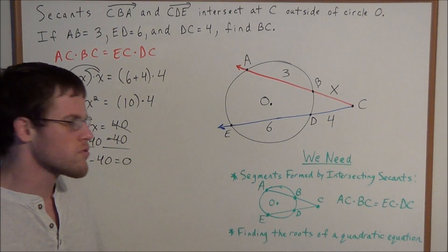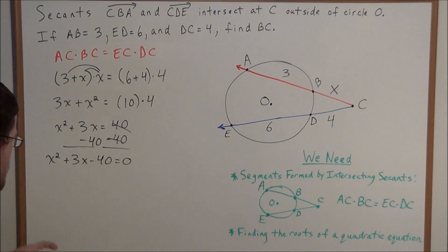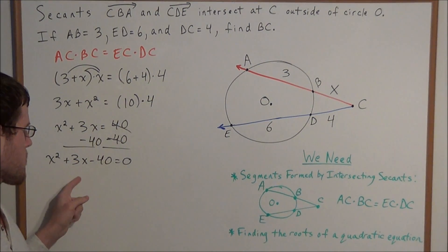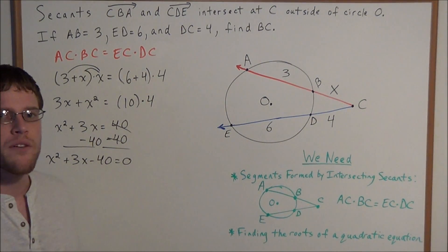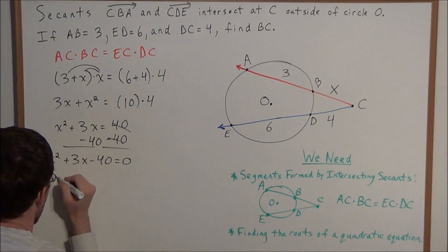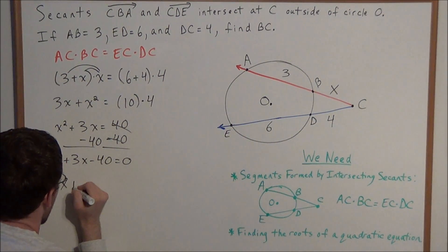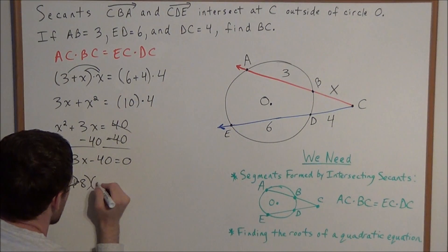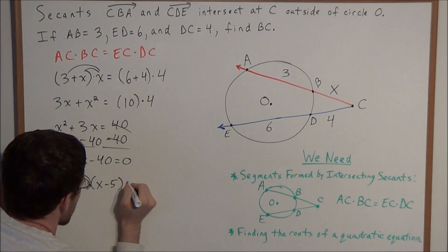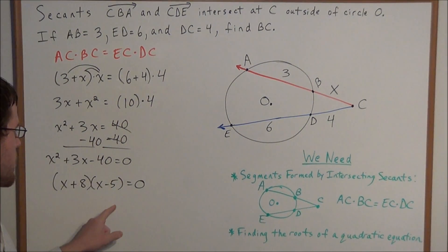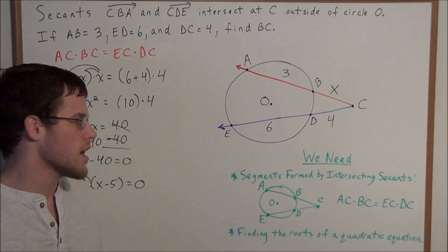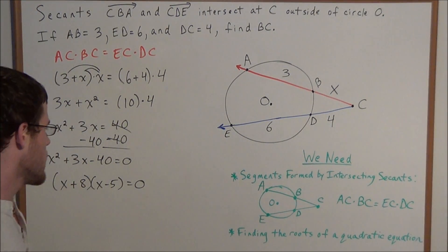This is where finding the roots of a quadratic equation comes in. We have to ask ourselves what two numbers add to a positive 3 and multiply to a negative 40. After a little thought, we arrive at (X + 8)(X - 5) equals 0, because 8 minus 5 gives us a positive 3 and 8 times negative 5 gives us negative 40.